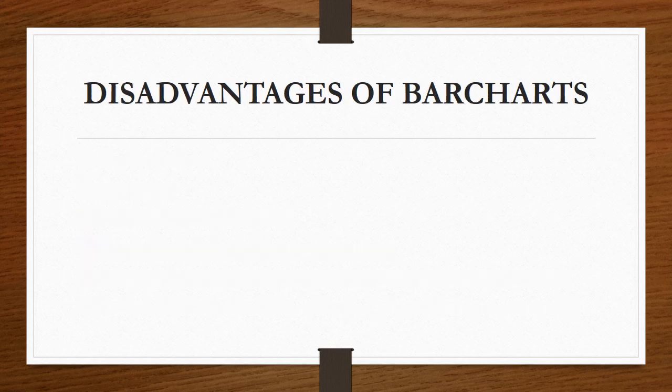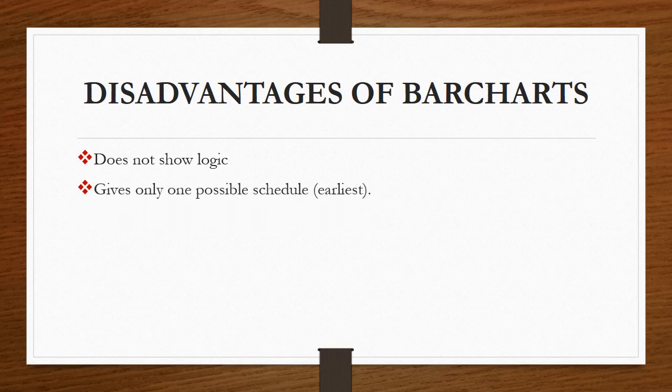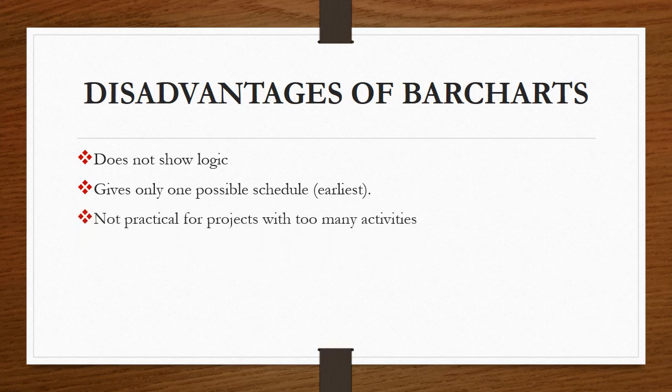Next is the disadvantages of bar charts. The first disadvantage is a bar chart does not show the logic. It gives only one possible schedule. That is the earliest possible schedule is obtained. Not practical for projects with too many activities. This bar chart is not practical for the project with too many activities. It does not show whether the project is behind the schedule. Since it does not show the logical relationship, we cannot predict whether the project is behind the schedule.